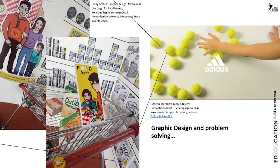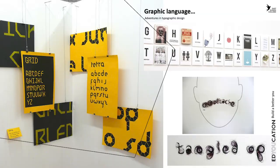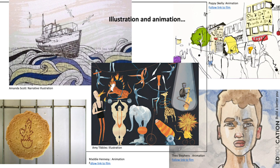Graphic design is massively important to society — from branding, advertising and information graphics to interactive and typographic design. It comes down to problem solving and communicating information to an audience in playful and appropriate ways. Emily created an awareness campaign for food banks and is another Farley Art Award winner. Georgia's film promoted participation in competitive sports for young women. Type and fonts are clothing for words, and how we dress them allows them to say things in different ways — digital or hand-drawn, it's all up for grabs.